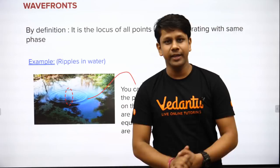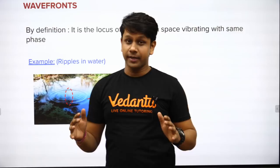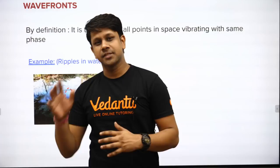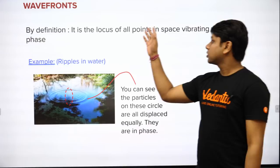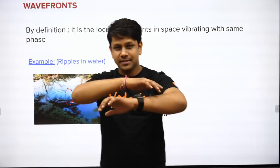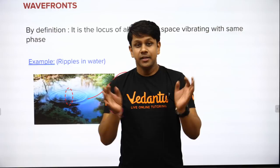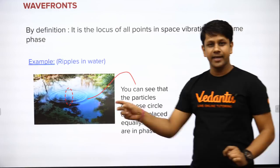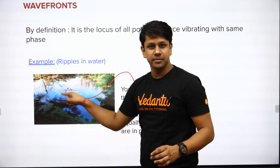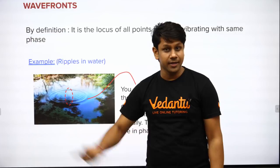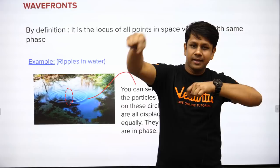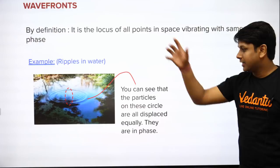Okay, let me give you the theory first. This is a concept-heavy topic, so your conceptual understanding must be strong to solve questions easily. The first concept is wavefront. A wavefront is the locus of all points in space vibrating with the same phase. For example, if you throw a stone in still water, ripples are created. Each circle formed by the ripples is a wavefront, because every point on that circle is vibrating in the same phase.